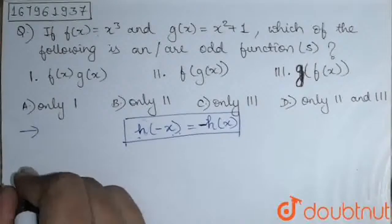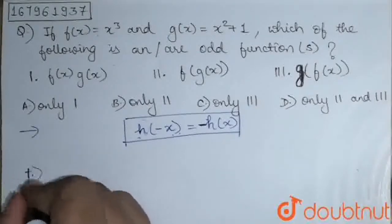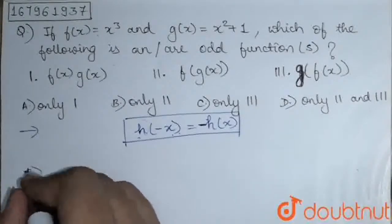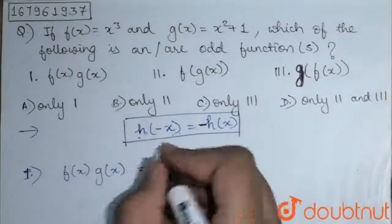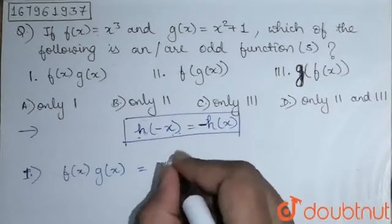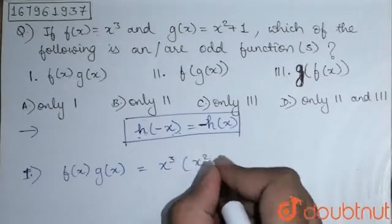Now, moving to our question. Our first function is given as f(x) into g(x). Simply multiplying f(x) into g(x), that is x³ into x² + 1.